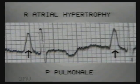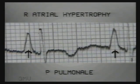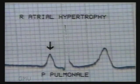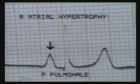This is a very prominent P pulmonale — 5 small squares tall — suggesting right atrial hypertrophy. In this ECG, lead 2 shows a tall and peaked P wave that is 3 small squares tall. This is P pulmonale, suggesting right atrial hypertrophy.